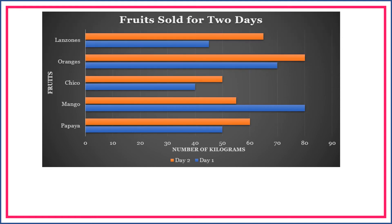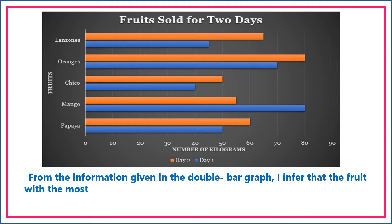Based on the data presented in this double bar graph, draw an inference. What is your inference? All right, from the information given in the double bar graph, I infer that the fruit with the most kilogram sold for two days is orange, as we can see in the graph presented.